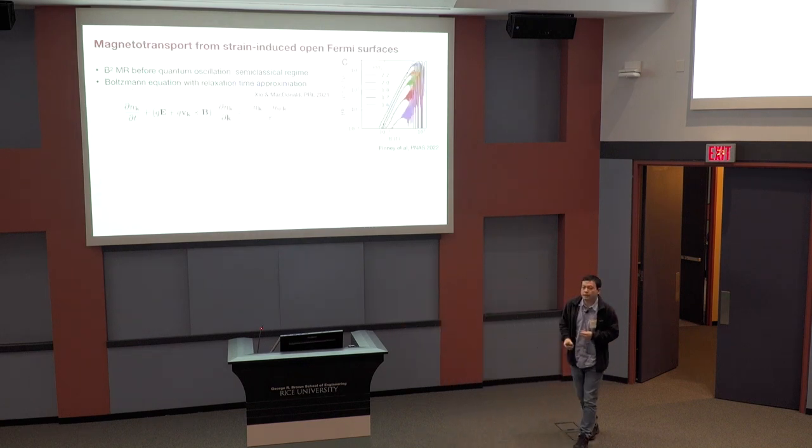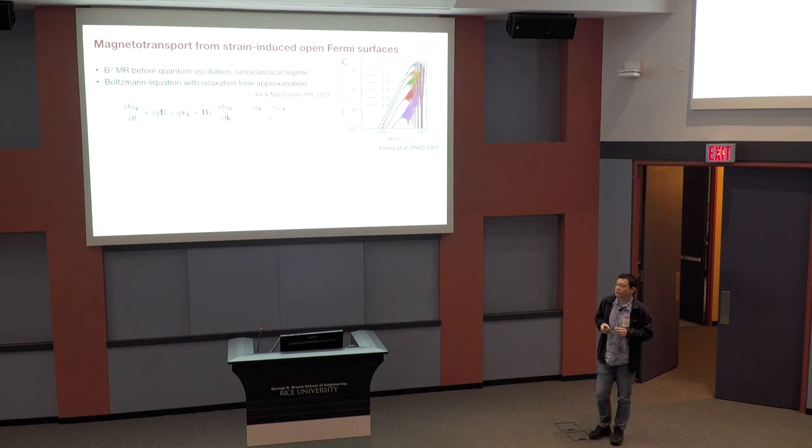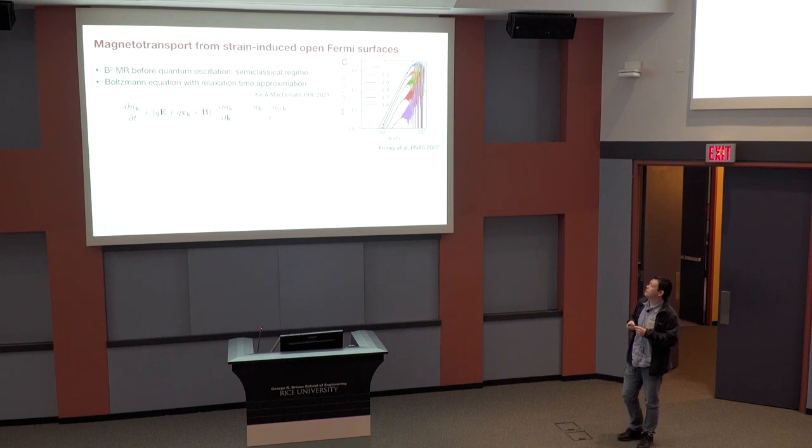So, right. So the key aspect that I showed previously is that I have this quasi one-dimensional conducting channels in the vicinity of the van Hove split, energetically split van Hove points. So the question is whether they can give rise to the unusual magnetotransport properties.